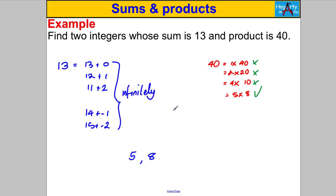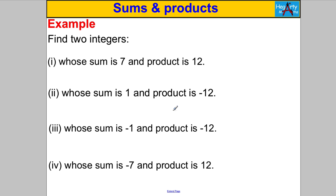Sum of 7 and product of 12. I think of 12 and list: 1×12, 2×6, and 3×4. Do any of those have a sum of 7? Yes — 3 and 4. So my numbers are positive 3 and positive 4.